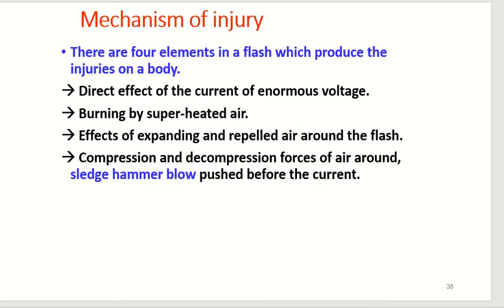Regarding its mechanism, there are four elements in a flash which produce injuries on a body. Number one: direct effect of the current of enormous voltage. Number two: burning by superheated air. Number three: effects of expanding and repelled air around the flash.